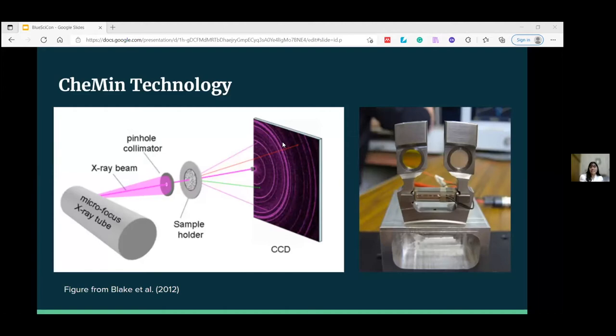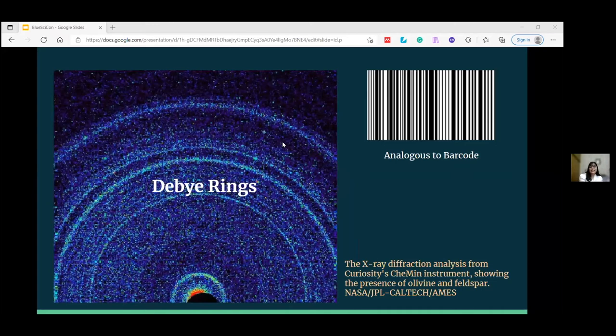and uniquely identifying which minerals are present and their quantity. These diffracted X-rays are then focused onto a CCD, which we can see as the black screen. It is analogous to the back of a digital camera. We get these rings on the CCD called the Debye rings, and these are analogous to barcodes. Then the radius of these rings are measured using Bragg's law.